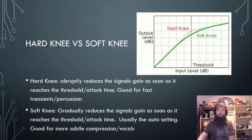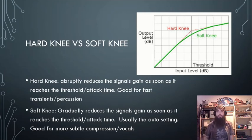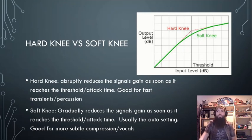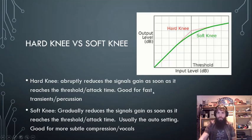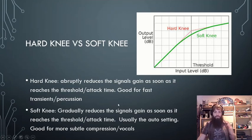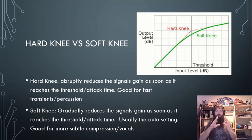Hard knee versus soft knee — usually just a button, sometimes a knob. A hard knee abruptly reduces the signal gain as soon as it reaches the threshold and attack time. It's good for fast transient percussion because you want it to react immediately at the threshold and start the attack.